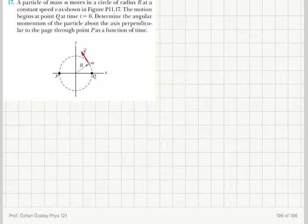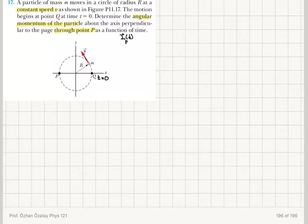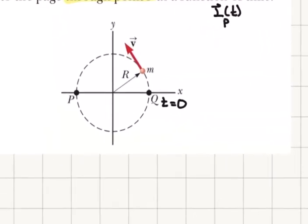Let's look at one more example of application of angular momentum before we move on to the angular momentum of a rotating rigid object. A particle of mass m moves in a circle of radius R at a constant speed v, so we have uniform circular motion. The motion begins at point Q at time t equals zero. Determine the angular momentum of the particle about the axis perpendicular to the page through point P as a function of time.